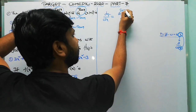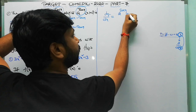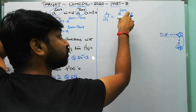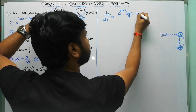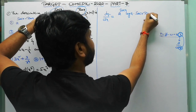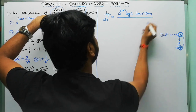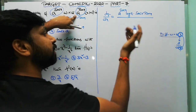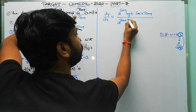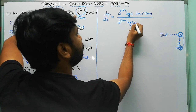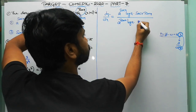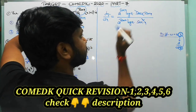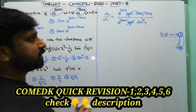The derivative of a^(sec x) is a^(sec x) · ln(a) · sec(x)·tan(x) by the chain rule, since d/dx[sec x] = sec(x)·tan(x). The denominator derivative of a^(tan x) is a^(tan x) · ln(a) · sec²(x). The sec(x) cancels and ln(a) cancels.